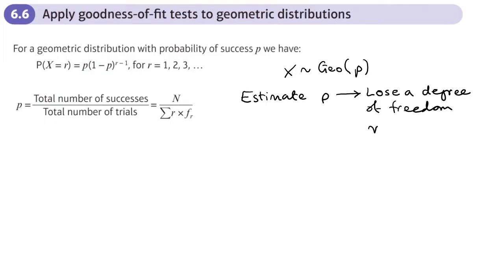Degrees of freedom is going to be the number of cells minus 2, rather than minus 1.